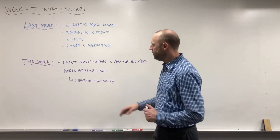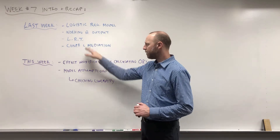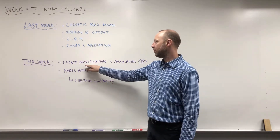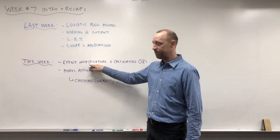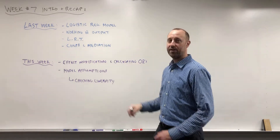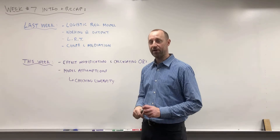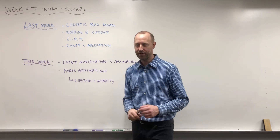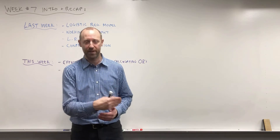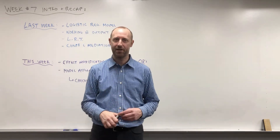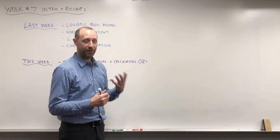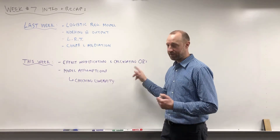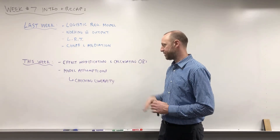This week we'll pick up where we left off, recap a little, and then go into effect modification — how we can calculate the group-specific odds ratios when there is effect modification. So if we allow the effect that smoking has on low birth weight to change depending on some other variable, how can we include that in the model and what does that mean for the odds ratios?